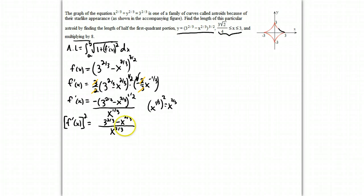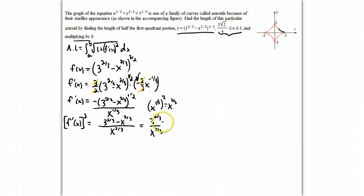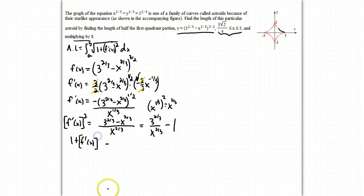This doesn't sit right — let's simplify before adding 1. Whenever you see multiple terms in a numerator but a single term in the denominator, you can break it into two parts: 3^(2/3)/x^(2/3) minus 1, because x^(2/3)/x^(2/3) = 1. That's convenient because the next step is to add 1, so the ones cancel and we end up with just 3^(2/3)/x^(2/3).